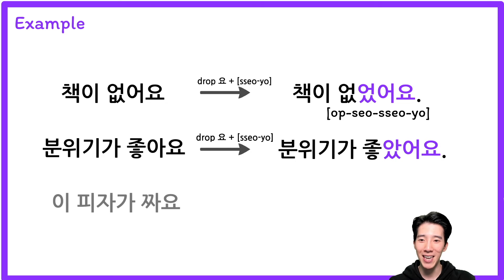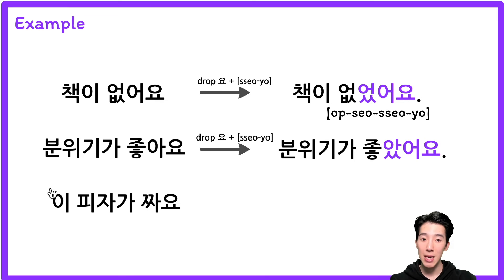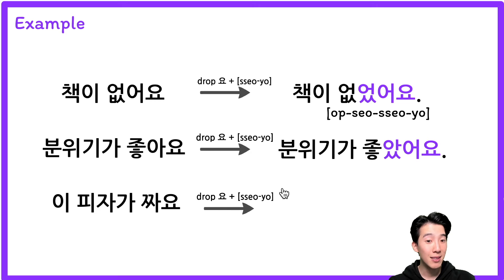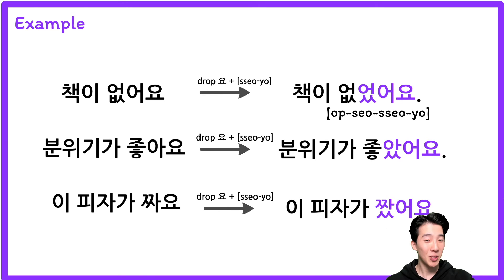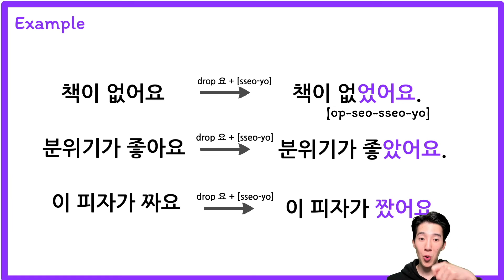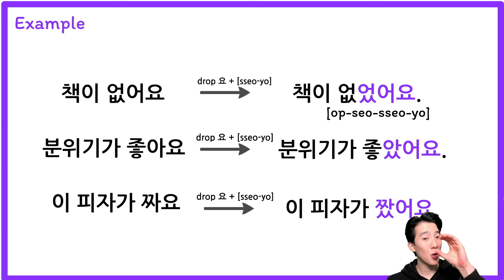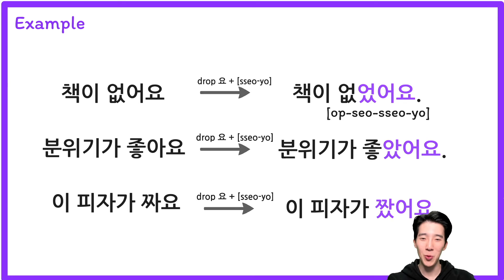분위기가 좋았어요. Next: 이 피자가 짜요 — this pizza is salty. Same rule: drop the 요, add 써요 — 이 피자가 짰어요. 먹어요 → 먹었어요. 가요 → 갔어요. 마셔요 → 마셨어요. Easy, right?